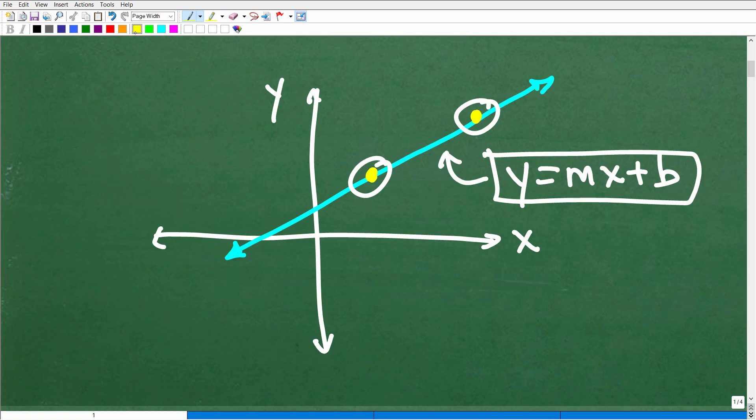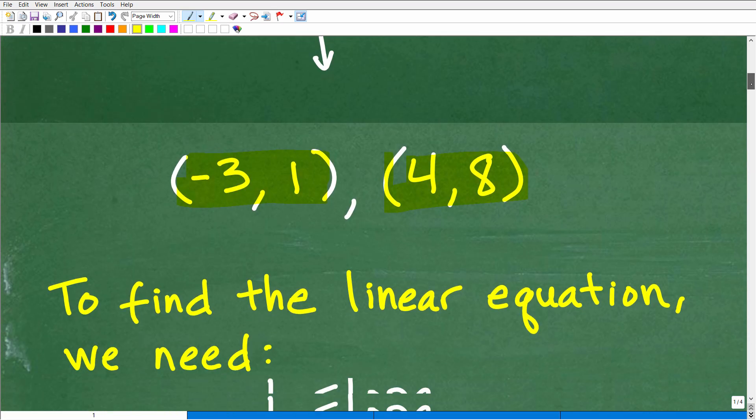Now, this type of problem typically comes after once you've learned how to graph linear equations. So hopefully you know something about the slope, how to find the slope, how to graph lines, et cetera. So just kind of graphically, this is kind of what's going on. We want to find the equation of the line, and here we have two points that are on this line. So how do we do this?